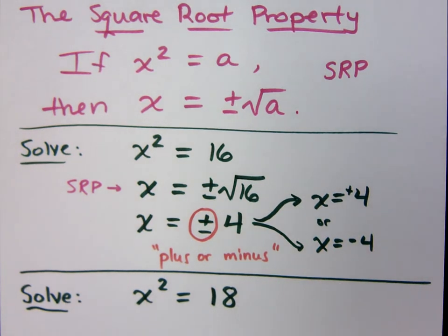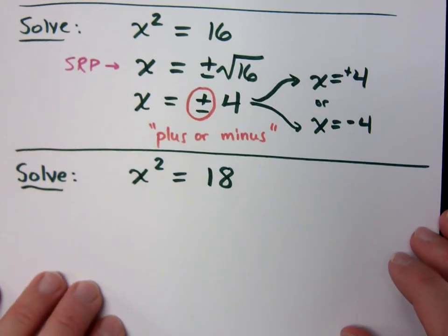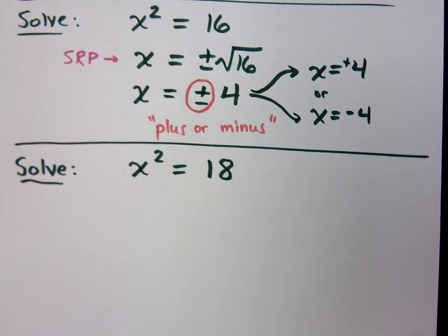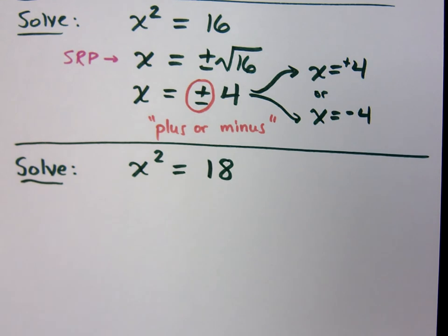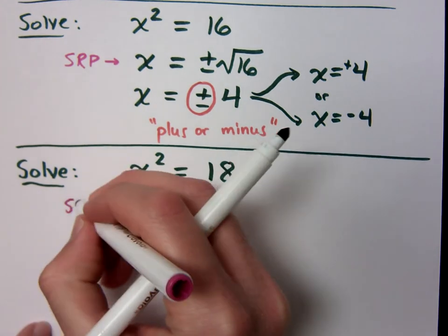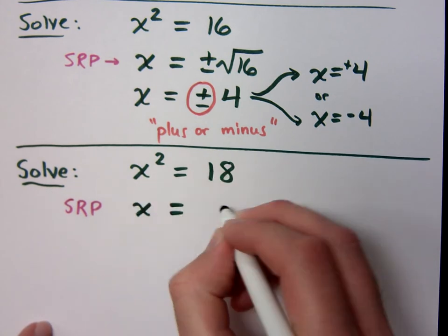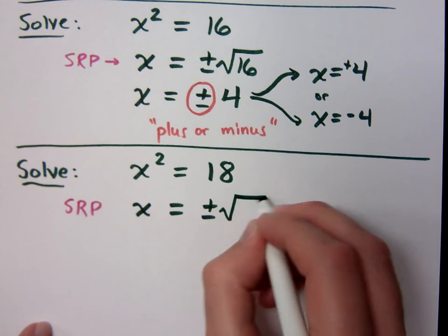Let's do another example. x squared equals 18. You say this doesn't factor, and to that I say so what? If it doesn't factor, that's okay. Today and all of next week is going to be about how do we take care of equations that don't factor — how do I solve those? So if I apply the square root property, then x equals plus or minus the square root of 18.